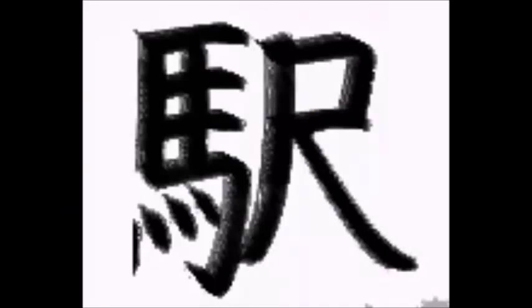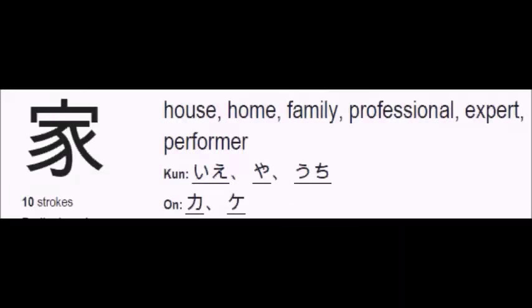The second-to-last kanji is Eki, which means Station. It has 14 strokes: 1, 2, 3, 4, 5, 6, 7, 8, 9, 10, 11, 12, 13 and 14. The last kanji is the House kanji, with 10 strokes: 1, 2, 3, 4, 5, 6, 7, 8, 9 and 10. The Kunyomi readings are Iye, Ya and Uchi, and the Onyomi readings are Ka and Ke. The meanings are house, home, family, professional, expert, and performer.